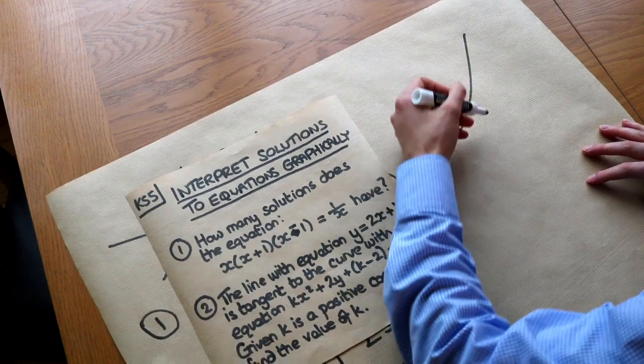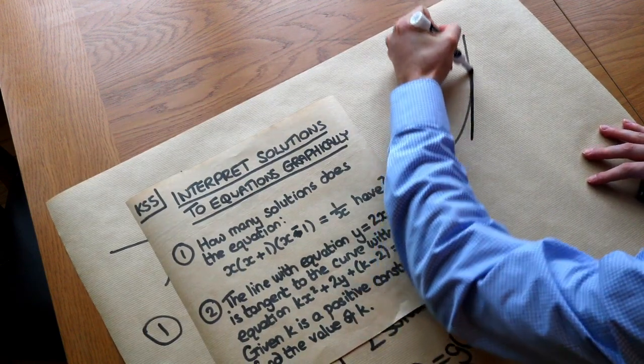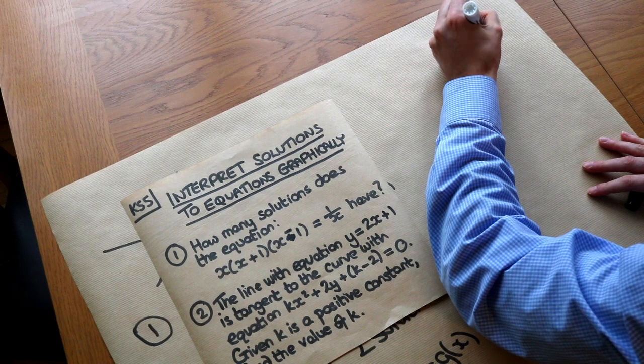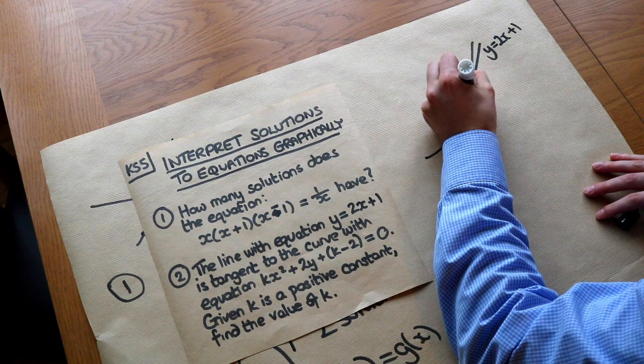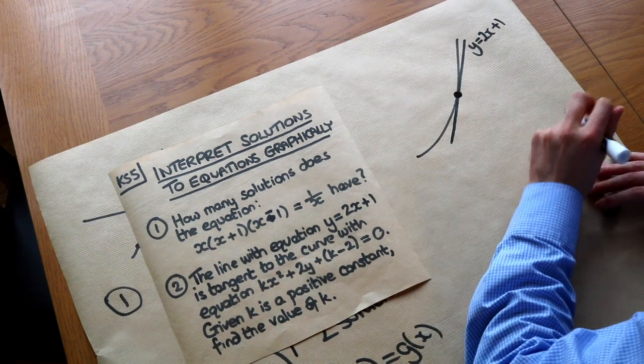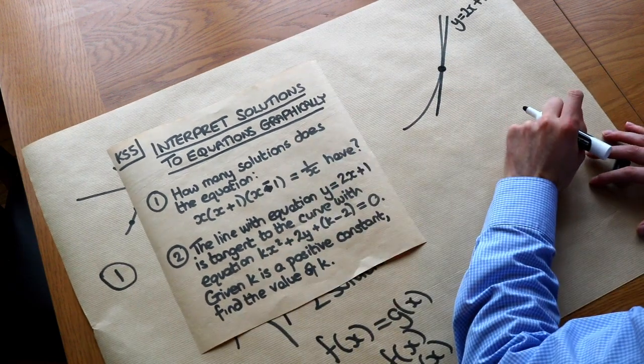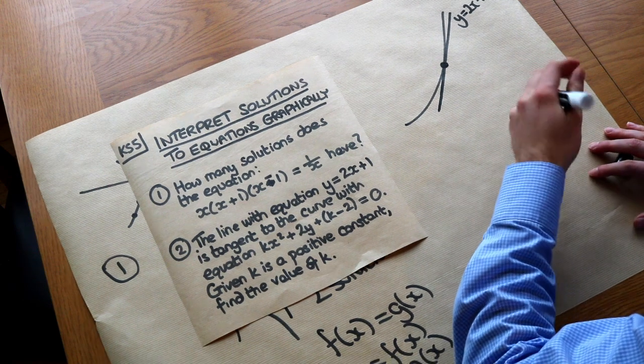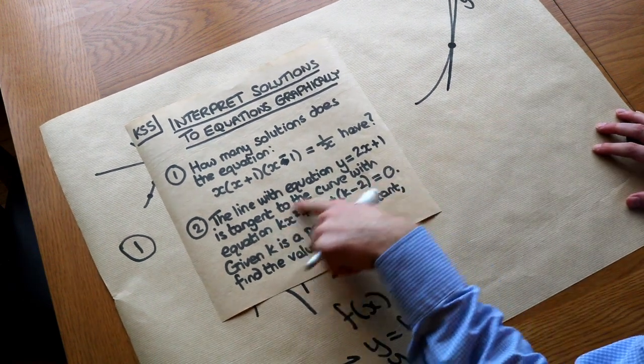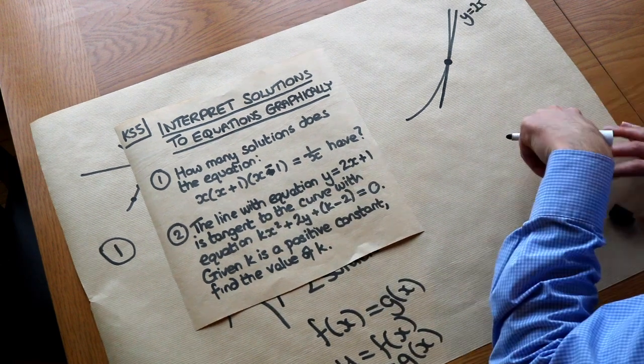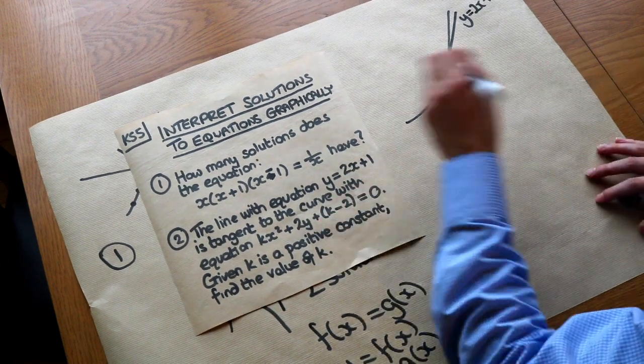And y equals 2x plus 1 is tangent to that, so it's going to touch it. That's what's meant by a tangent. And we can see there's one point of intersection where it touches. And then this one we are going to solve algebraically. By the way, you might be tempted to use differentiation for this, but the complicating factor is that we have a mixture of x and y in this expression here. So if we've got a point of intersection, we can solve these simultaneously.